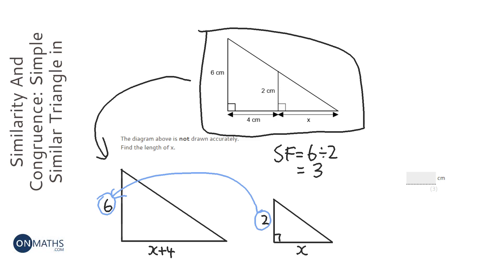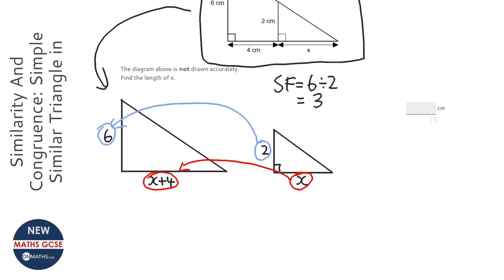So we've got x here and what do I times it by to get to the new length? Well I times it by 3, so I know that 3x is the same as x plus 4. So I've got myself a little equation here to solve.